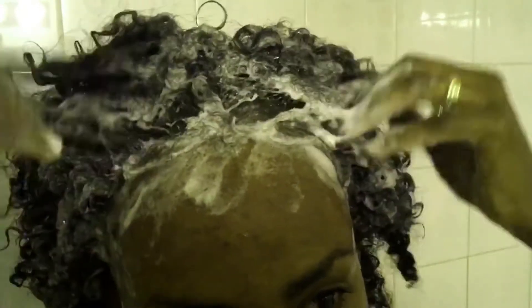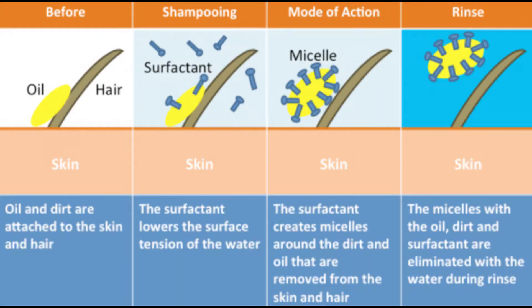The main function of shampoo is to clean the hair and scalp. Surfactants are the main ingredients in the shampoo formulation. The word surfactants means surface active agents. Surfactants are responsible for cleaning action by stirring up activity on the surface you are cleaning up.